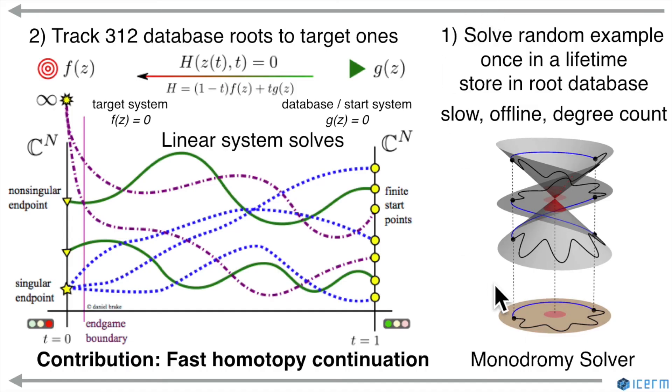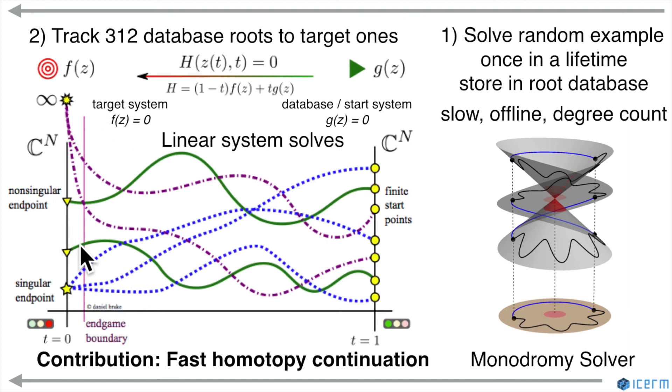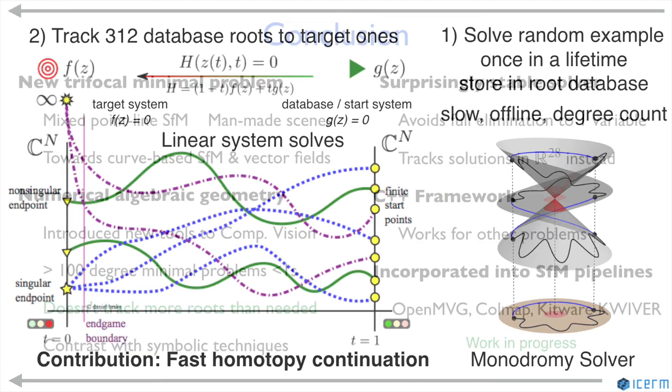We first solve a random polynomial system offline. Then, for each new problem, we morph the known roots to the new roots, running at 680 milliseconds on average.